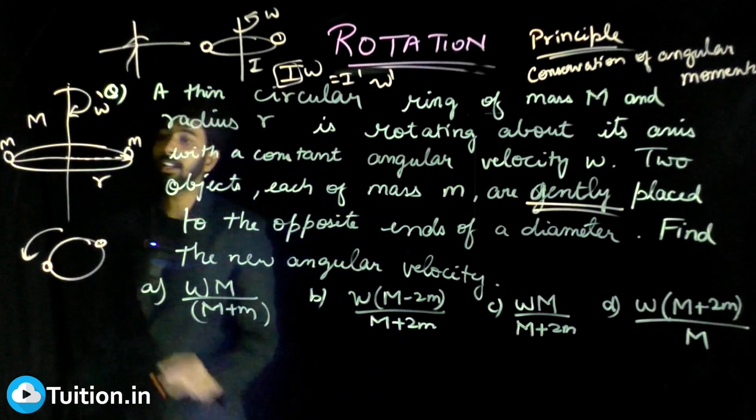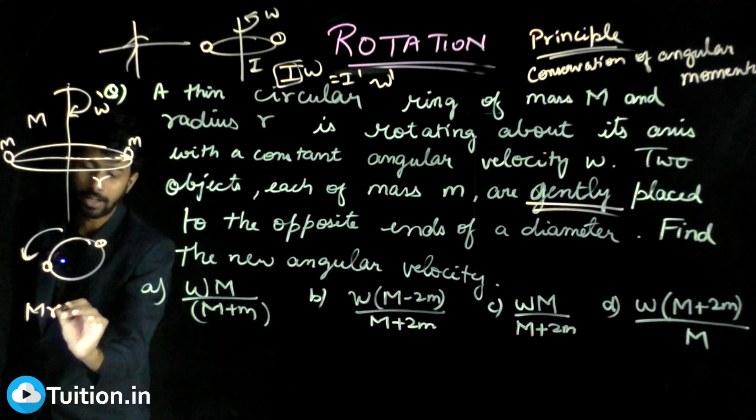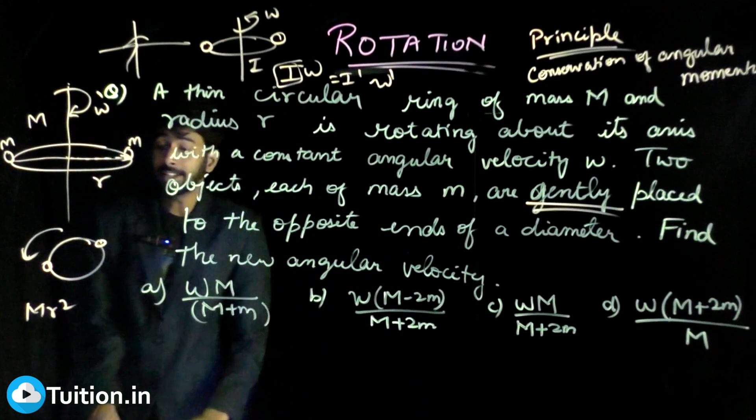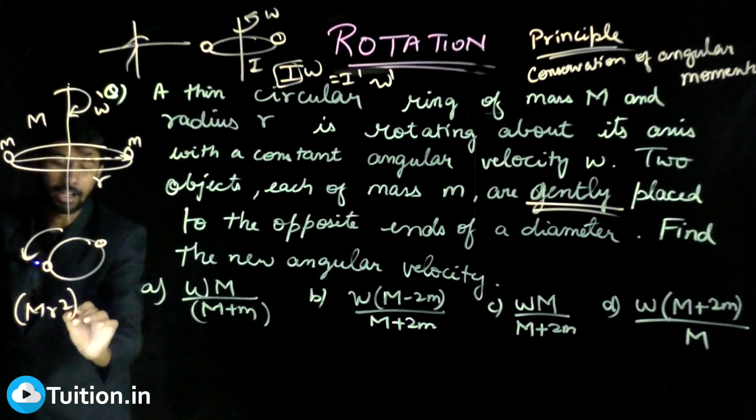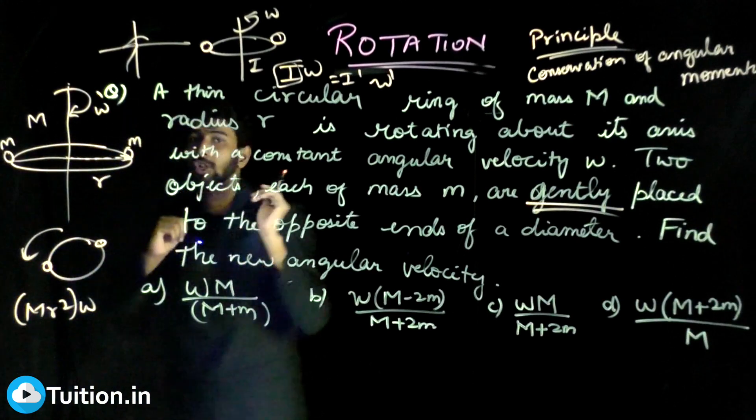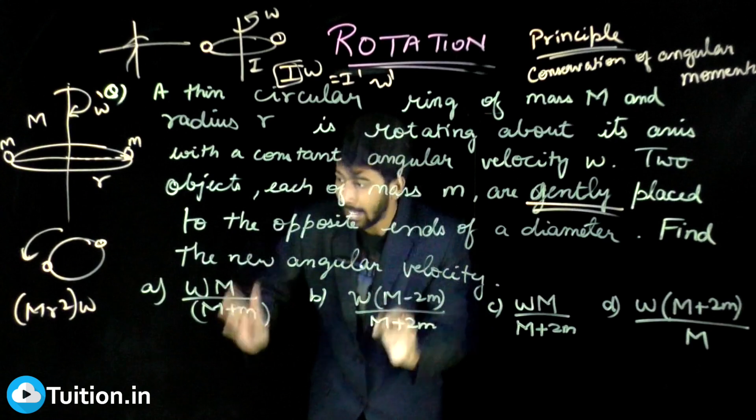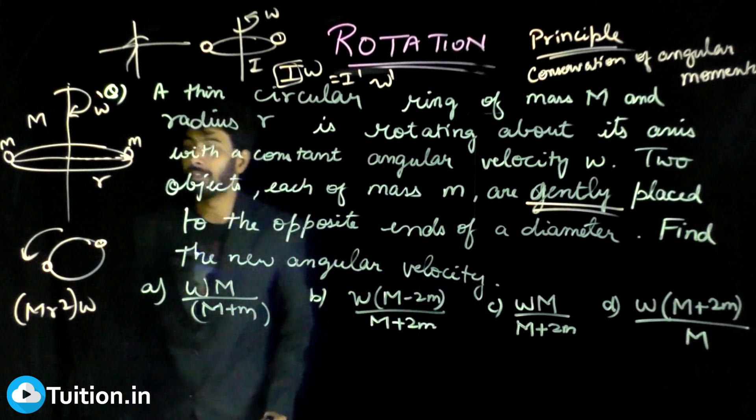What is the moment of inertia of a ring? It's nothing but mr² about this axis. And it's rotating with an angular velocity omega. So mr²ω is the initial angular momentum. This initial angular momentum has to be your final angular momentum. It has to be conserved.